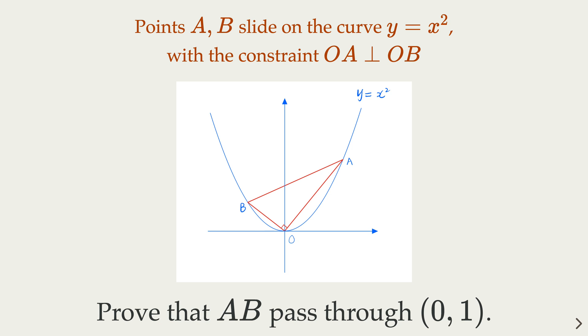We have parabola y equals x squared. Points A and B are on the curve with the constraint that OA is perpendicular to OB. We try to prove that line segment AB goes through point (0,1) on the y-axis.